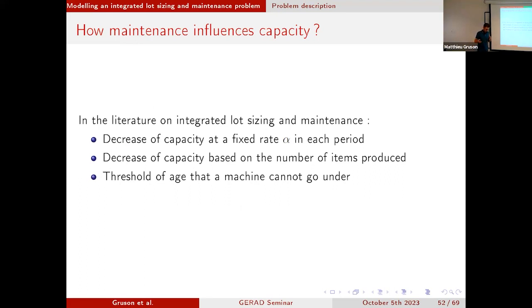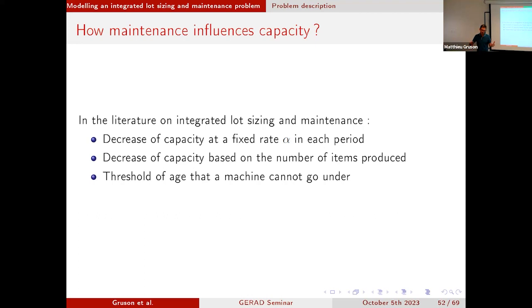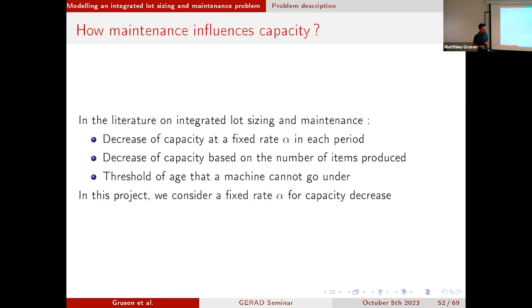In the literature on integrated lot sizing and maintenance problems, maintenance is considered in different ways. In some papers, there is a fixed decrease of capacity from one period to the next with a fixed rate alpha. In other papers, the decrease of capacity is based on the number of items produced — the more items you produce, the less capacity you have due to machine deterioration. The last main hypothesis is a threshold on the age of the machine: after a specific number of periods, you must perform maintenance operations. In this project, we use the first option: a fixed decrease of capacity, losing alpha percent every period, and if we perform maintenance, we go back to 100% capacity.